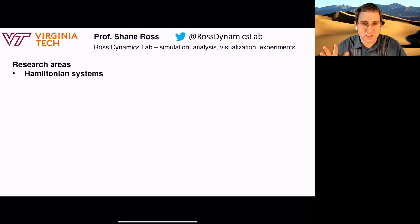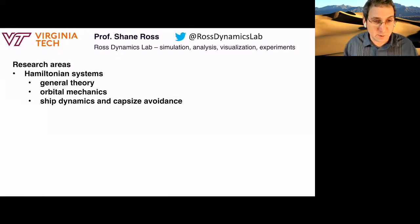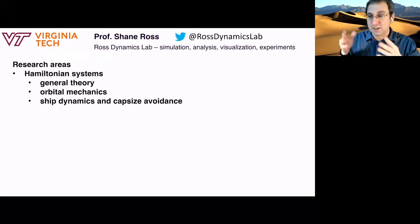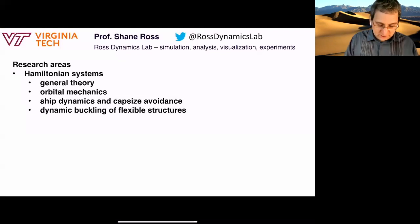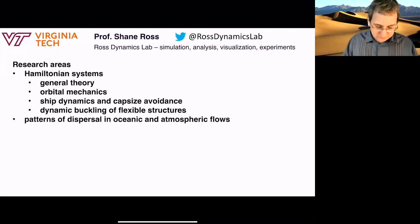I do stuff in Hamiltonian systems. I don't know if we're going to say much about that in this class or even orbital mechanics. Hamiltonian systems is an aspect of classical mechanics, the way of formulating classical mechanics. The nice thing about it is it has a lot of beautiful geometry. And one of the things about this class is you learn how dynamics is related to geometry. Things related to orbital mechanics, ship dynamics, dynamic buckling of flexible structures.